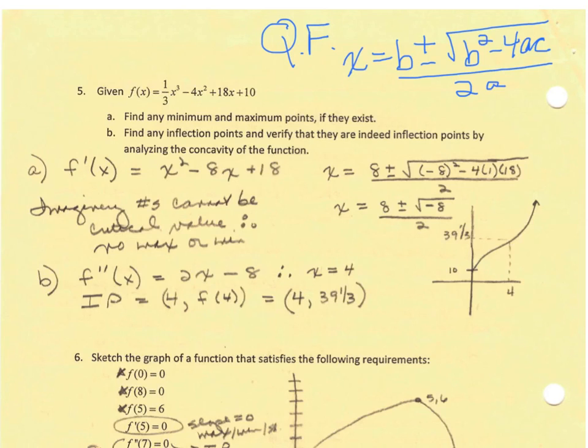Imaginary roots cannot be critical values. Therefore, there's no max, there's no min, and there's also no shelf. I can then go ahead and still answer part B, which talks about inflection points. Doing part B, I set my second derivative, which is 2x minus 8, equal to 0.